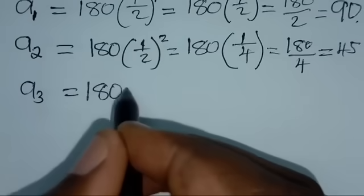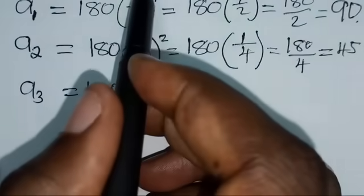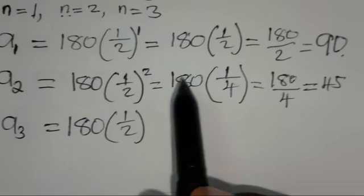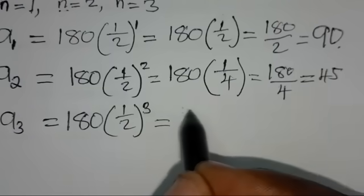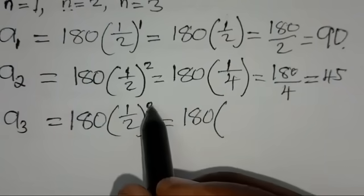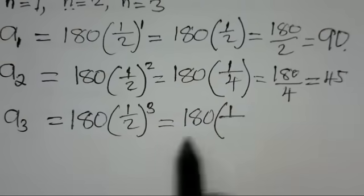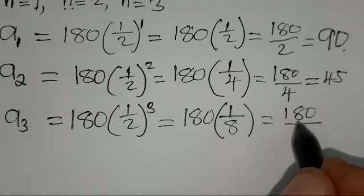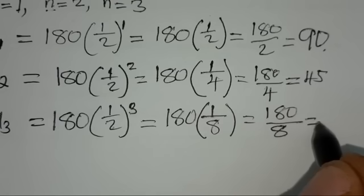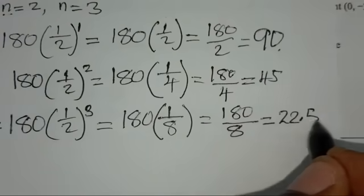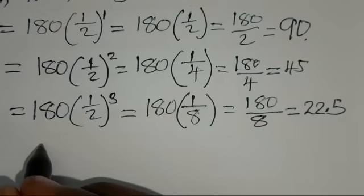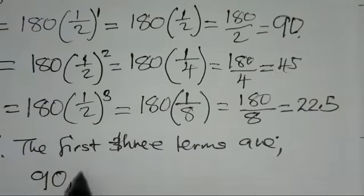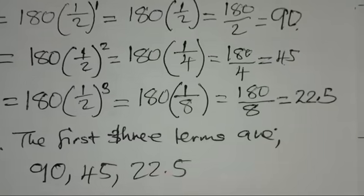For the third term, a3 equals 180 times (1/2) to the power 3. Since 2 cubed is 8, we have 180 divided by 8, which gives 22.5. Therefore the first three terms are 90, 45, and 22.5.